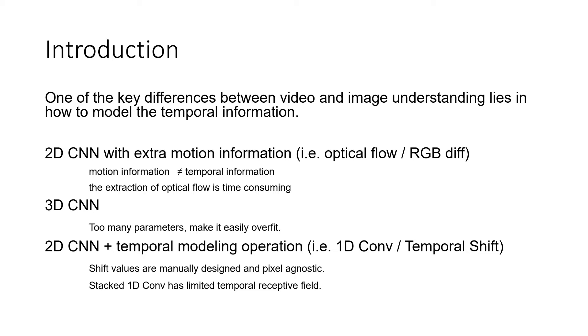Another series of works resort to factorize the 3D CNN into a 2D spatial CNN and temporal modeling operation like 1D convolution, this is R2 plus 1D, and TSM, that is temporal shift. However, both methods still have limitations. For example, for TSM, the shift values are manually designed and pixel-agnostic. For 1D convolution, the stacked 1D convolution has very limited temporal receptive field.